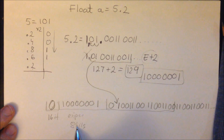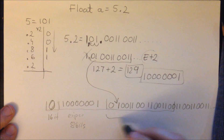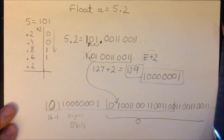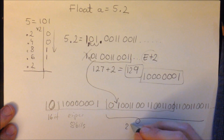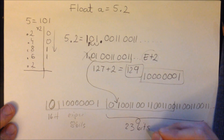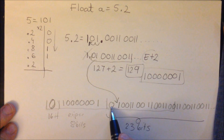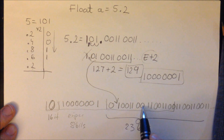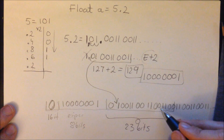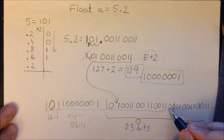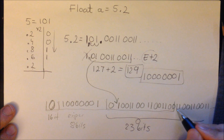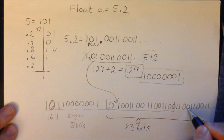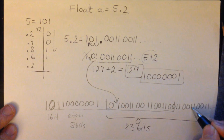Let's count the fraction bits to confirm: 1, 2, 3, 4, 5, 6, 7, 8, 9, 10, 11, 12, 13, 14, 15, 16, 17, 18, 19, 20, 21, 22, 23. Yes, there are 23 bits in the fraction part.